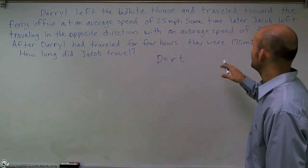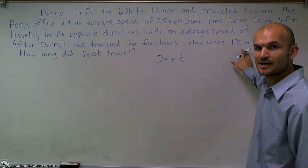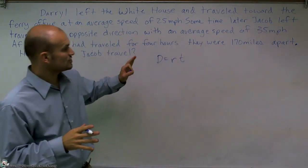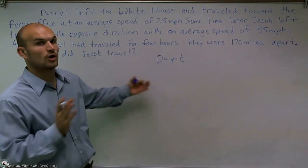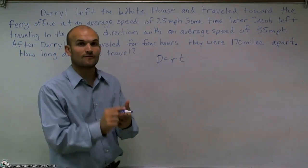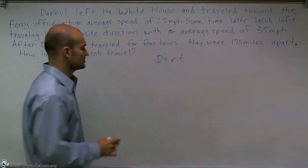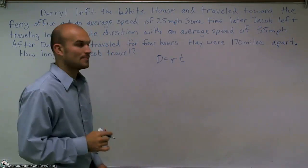Now, automatically, some of you might think, well, what about this 170 miles? Well, 170 miles isn't just what Jacob traveled. That's how far away they were apart. So we need to figure out how far Jacob traveled and how far Daryl traveled. So what we're going to do is I'm going to set up two separate equations here.